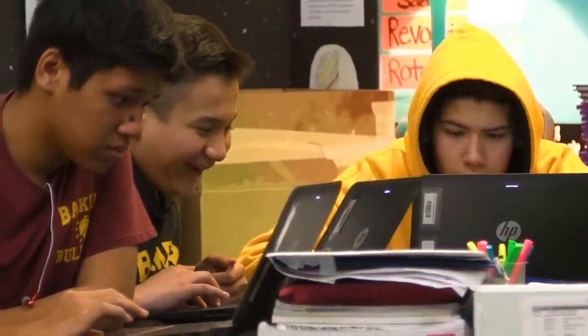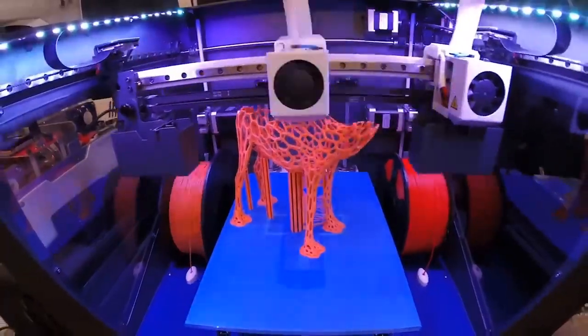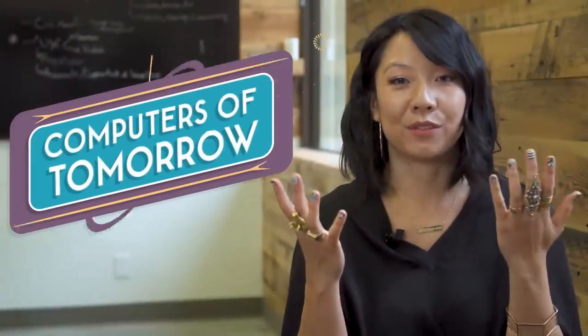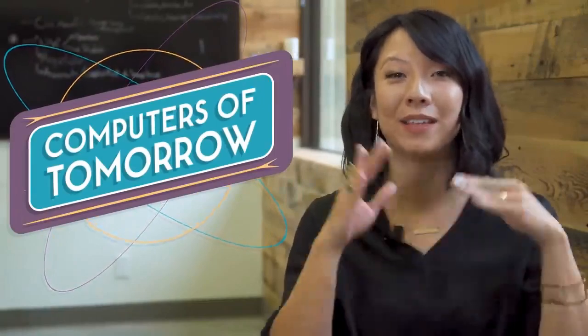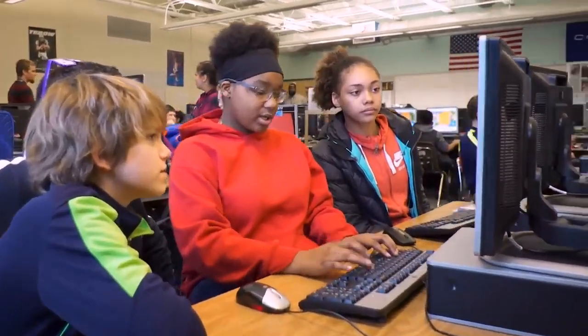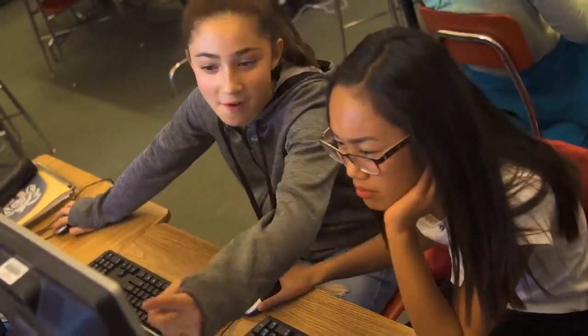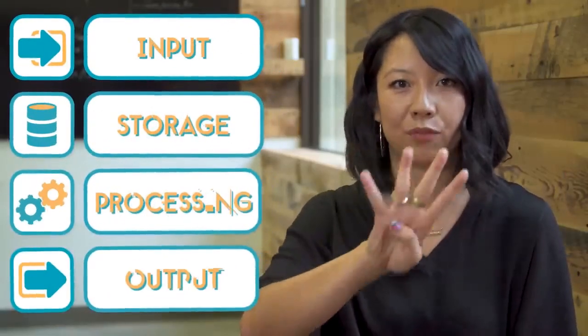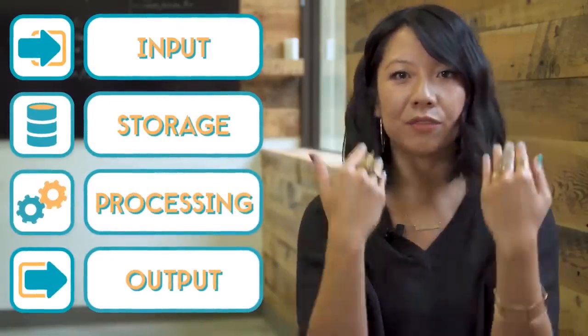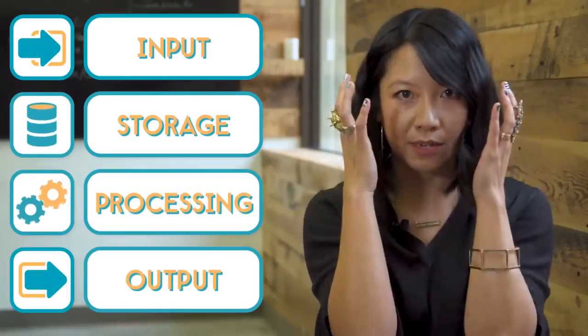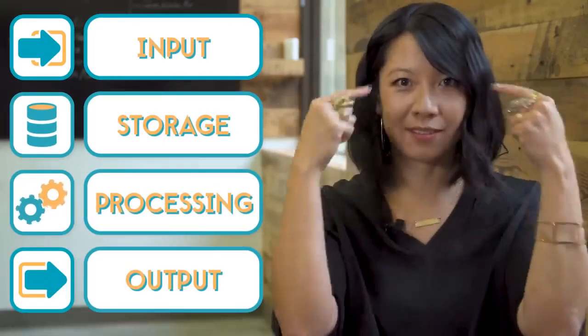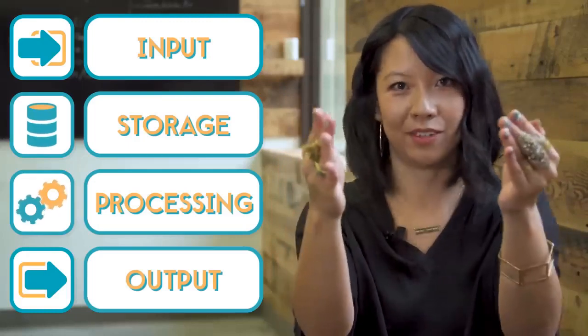The computers we use today look really different from the earliest thinking machines. And who knows what the computers of tomorrow will be like? My hope is that you get to help decide what you want the computers of tomorrow to look like. But across all computers, regardless of the different types of technology they use, they're always doing the same four things: they take in information, they store it as data, they process it, and then they output the results.